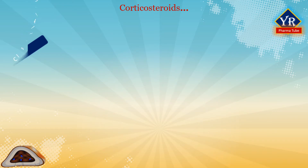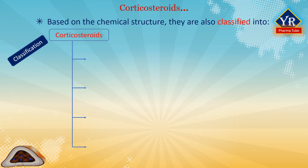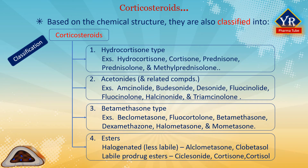Classification of corticosteroids. Corticosteroids are grouped into four classes based on their chemical structure. Number one: hydrocortisone type. Number two: acetonides and related compounds. Number three: betamethasone type. Number four: esters. The examples of each type have also been given here.